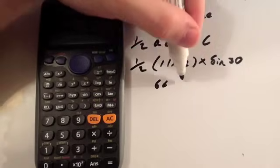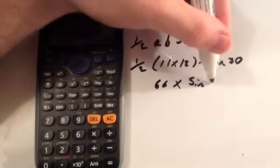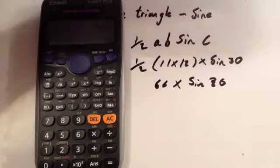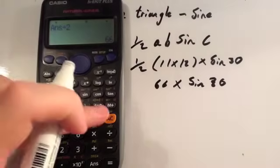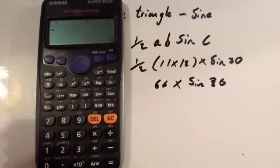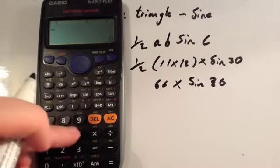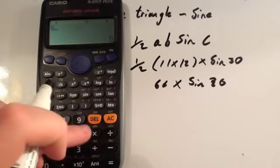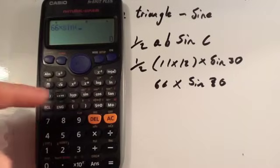So this is 66, and we're going to times that by the sine of 30. If you're good at trigonometry or you know your trig quite well, you should know that the sine of 30 is 0.5, and you should be able to work out this answer quite easily from here. If you don't know that, you should do 66 times the sine of 30.